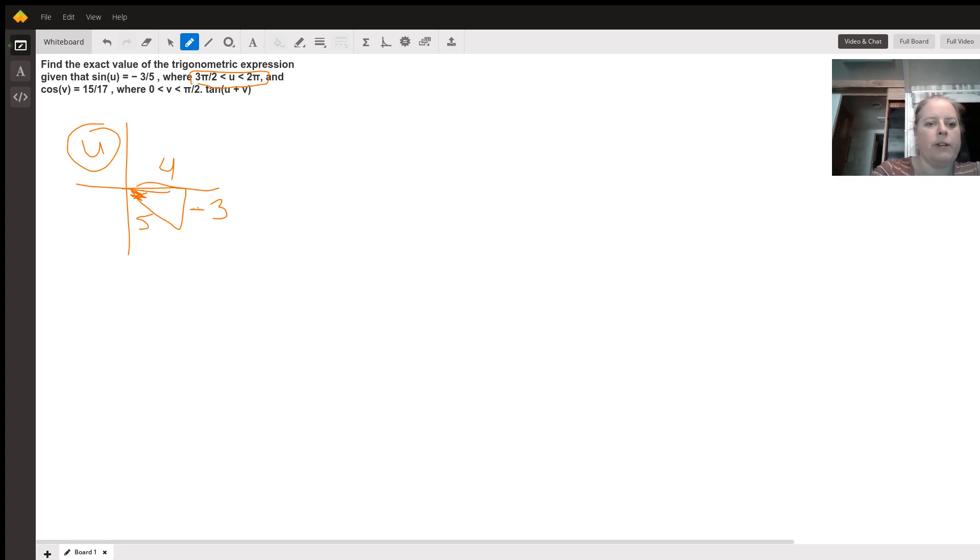So now we're going to do the same thing for v. v, it tells us, is between 0 and π/2. So that puts it in the triangle in quadrant 1. Here's our angle right here.